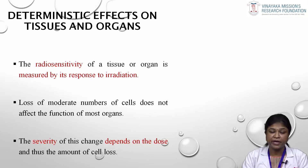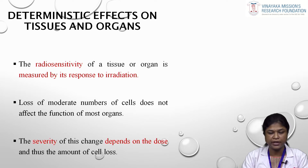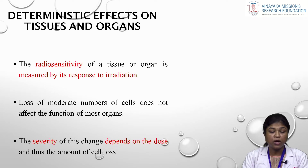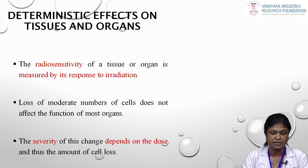The effects on tissues and organs depend upon the radiosensitivity of those tissues and organs. Organs absorb varying amounts of radiation and sometimes require more radiation to produce cell killing. Loss of a moderate number of cells does not affect the function of most organs, so quite a large dose of radiation is required to cause cell death. The severity of change depends on the dose and thus the amount of cell loss.